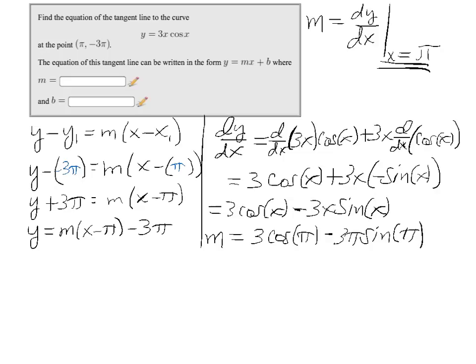But we know that the sine of π is 0, so this whole term is 0. And so that leaves us with 3 times cosine π. But the cosine π is minus 1. So the slope is minus 3.